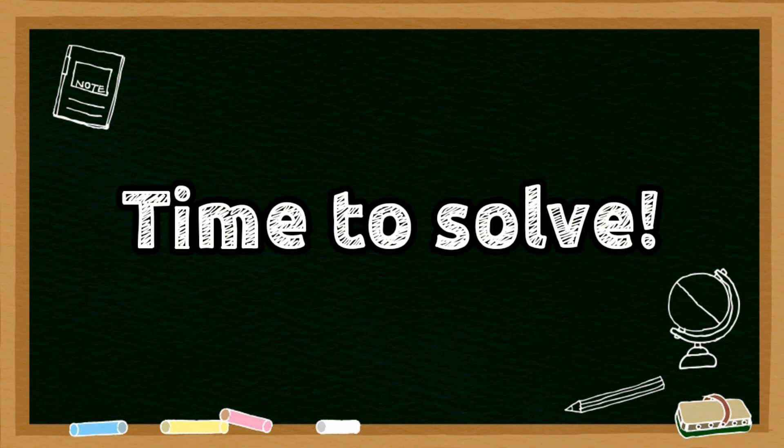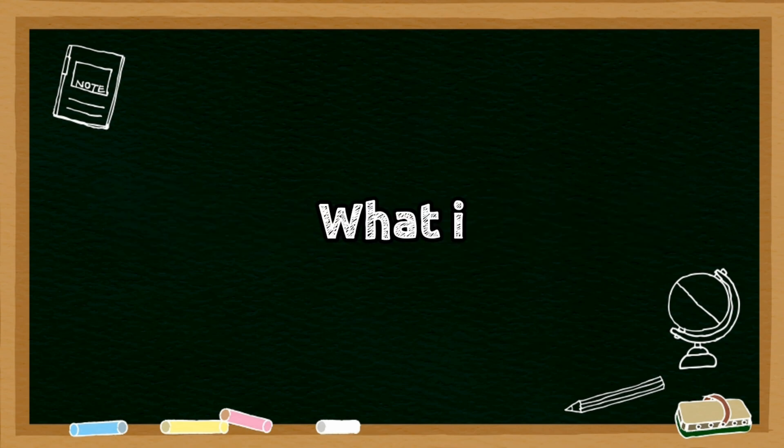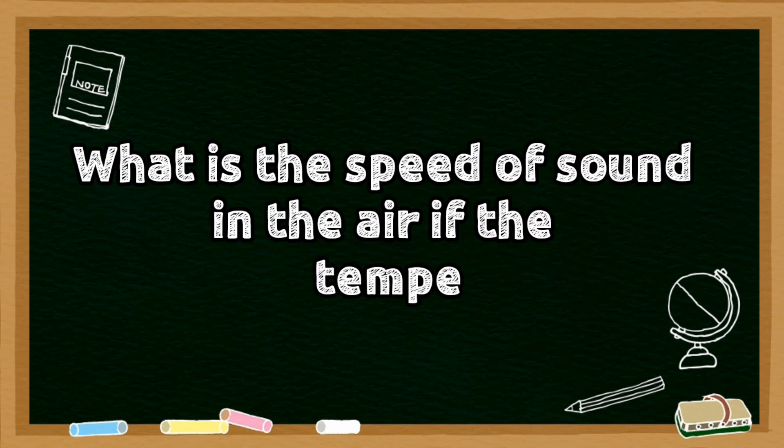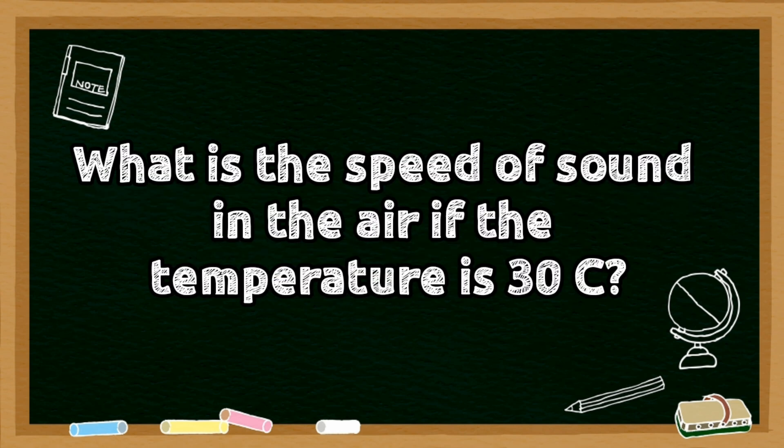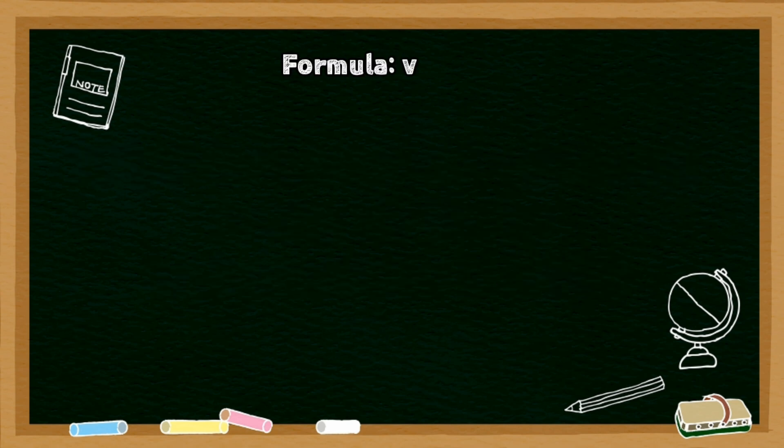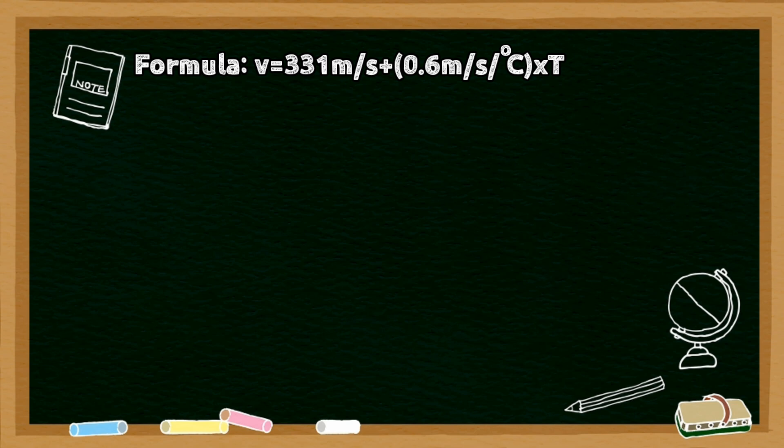Let's try to solve. What is the speed of sound in air if the temperature is 30 degrees Celsius? Don't forget our formula: velocity equals 331 meters per second plus 0.6 meters per second divided by degree Celsius times temperature.